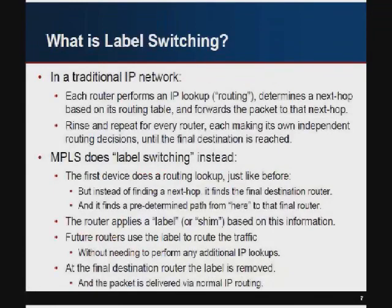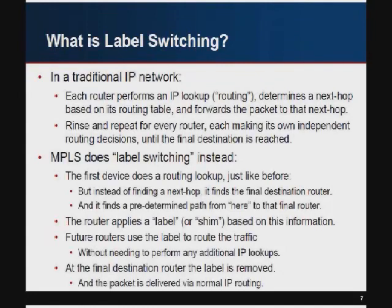In a traditional IP network, each router performs an IP lookup — called routing — finds the next hop, looks at the routing table, and forwards the packet. This happens independently at each and every router until the destination is reached. It's like handing a package to UPS and having each person look at the destination and figure out how to get it there, then hand it to the next person who does the exact same thing over again — repeating the process, doing a full routing lookup.